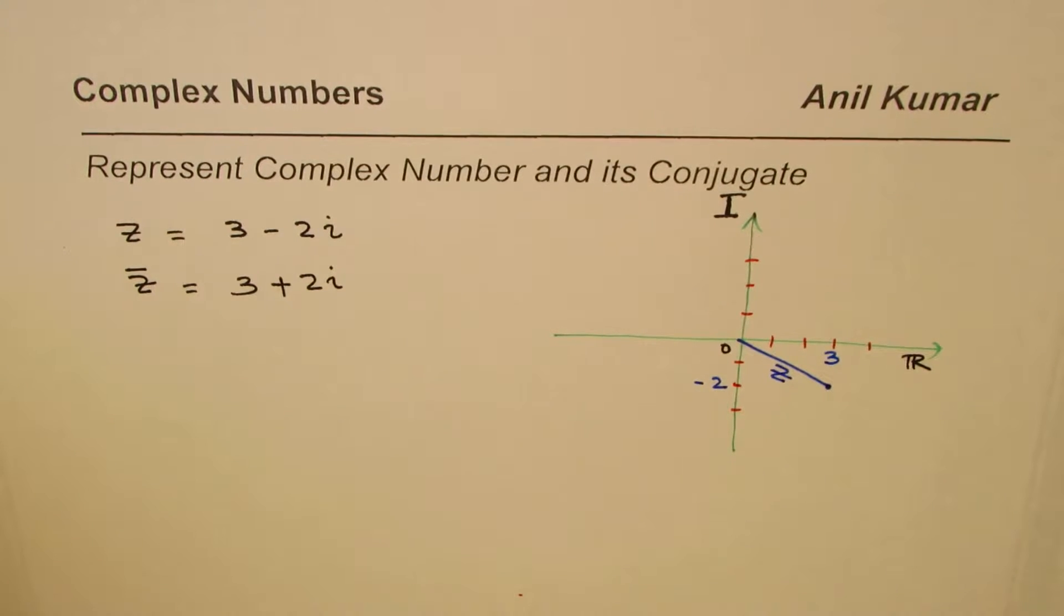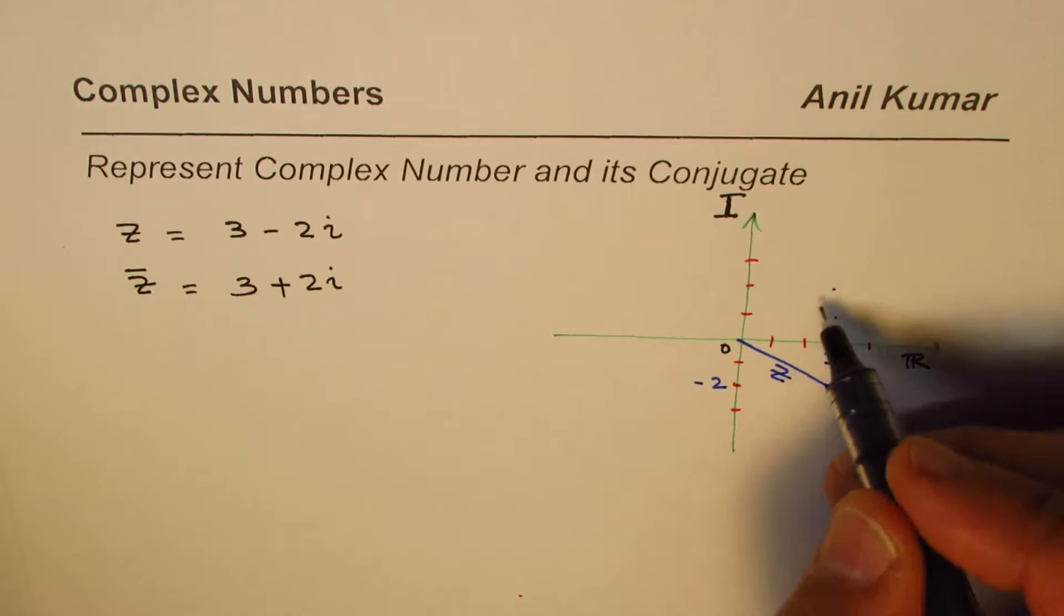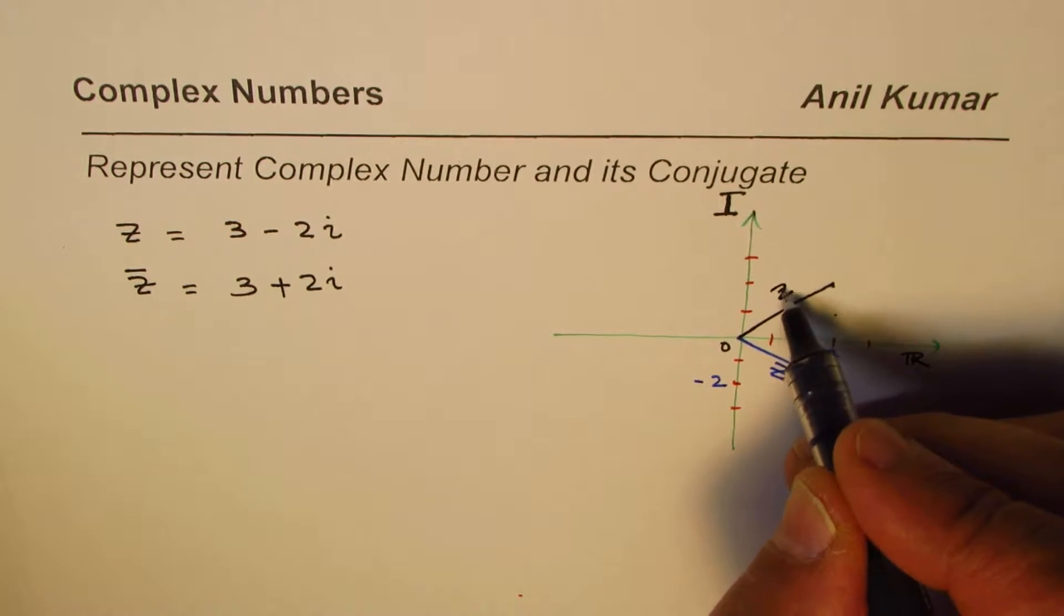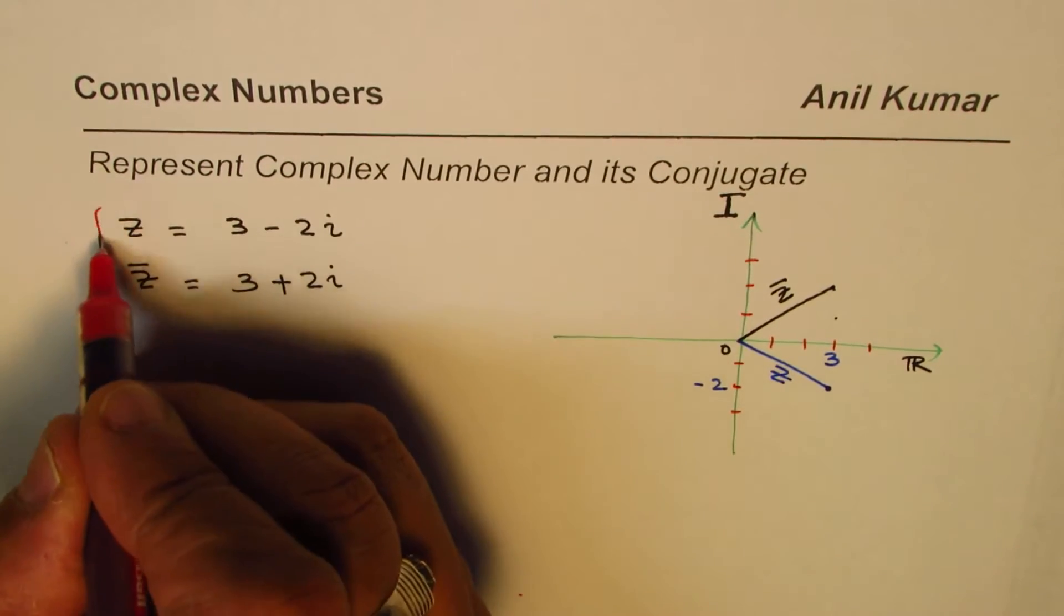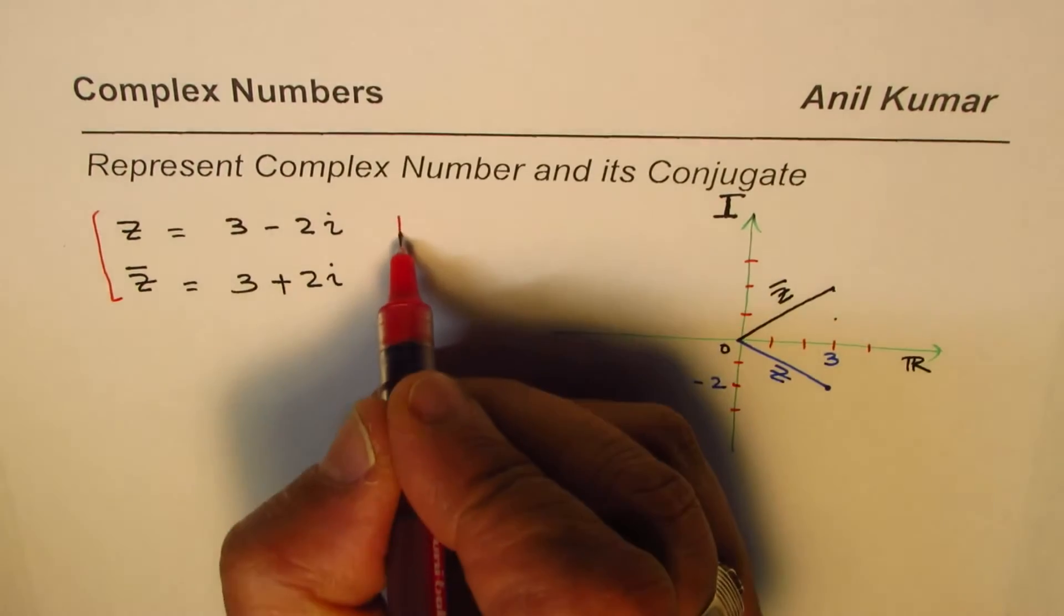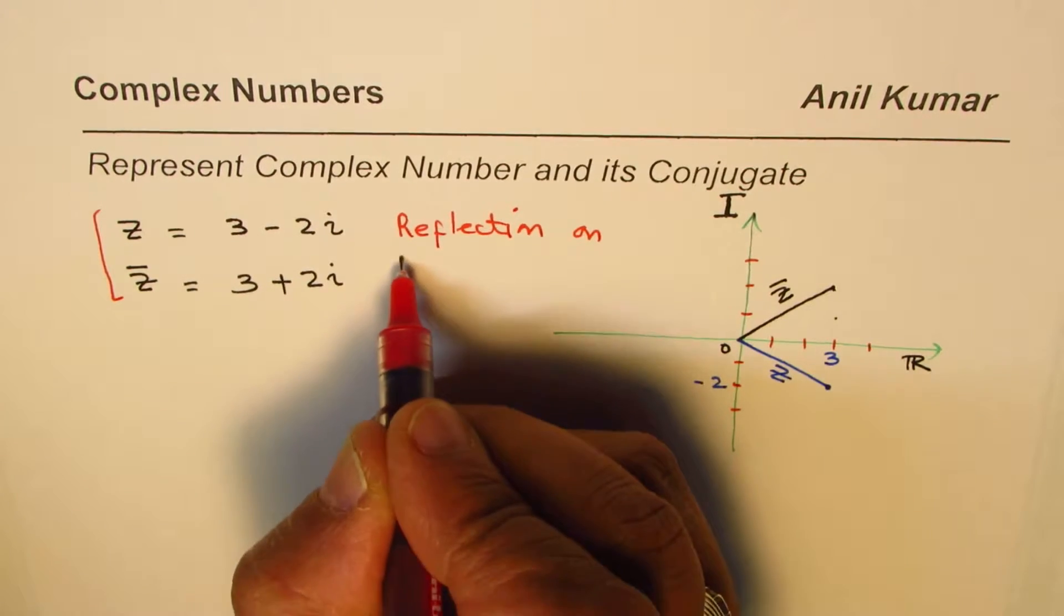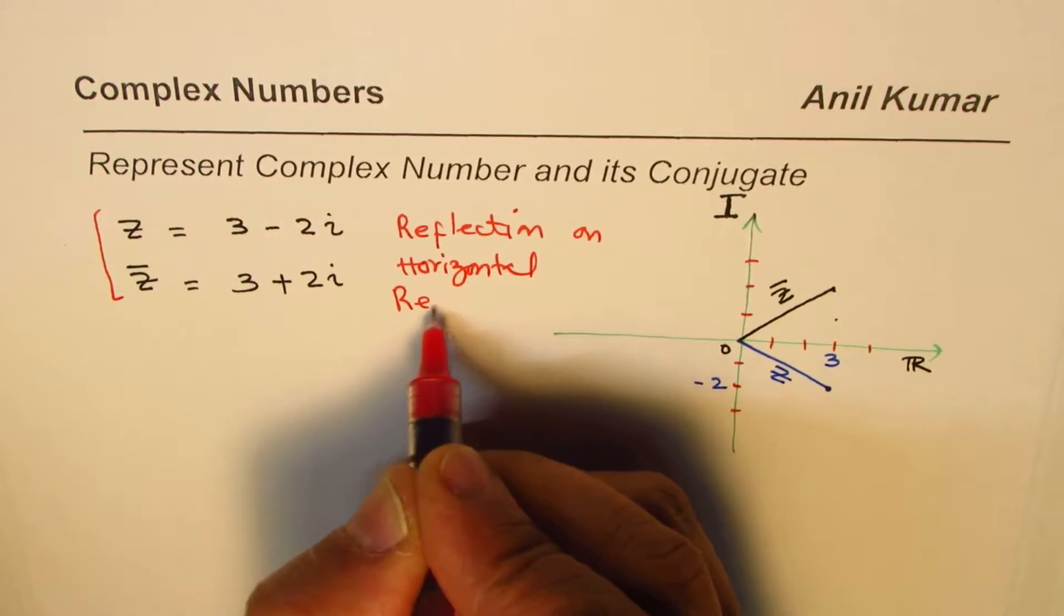How about the conjugate part? The conjugate is 3 + 2i, so 3 on the real axis and then we go up 2 units. This is the conjugate part. Do you see how they are related? It's very clear that these two are basically reflections on the horizontal real axis.